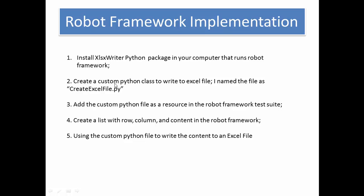Step two: create a custom Python class to write to an Excel file — I named the file create-excel-file.py. Step three: add the custom Python file as a resource in the robot framework test suite. Step four: create a list with row, column, and content in the robot framework test case. Step five: use the custom Python file to write the content to an Excel file. These are the five steps we follow when writing to an Excel file in robot framework test automation.